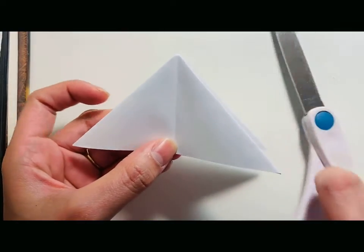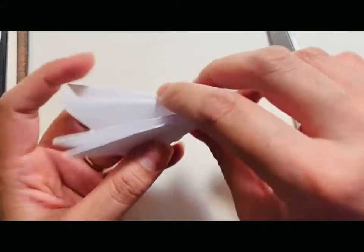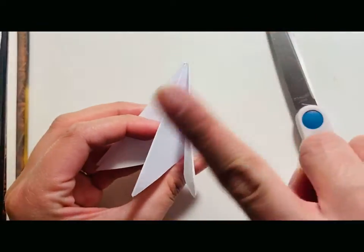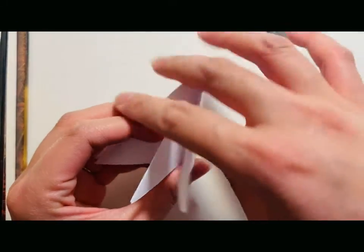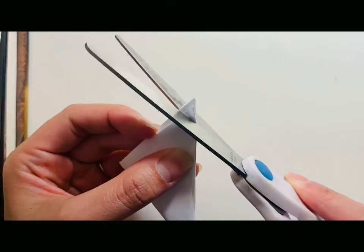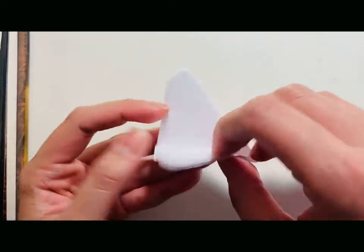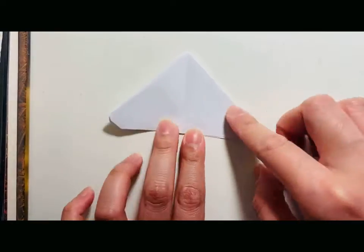And then fold it in half completely. Make sure you're going to cut along the corner that are separate instead of the ones that are joined together. You're just going to cut the corners into a curve so it's closer to the shape of a moth's wings. And then we are going to open it up to the triangle shape again.